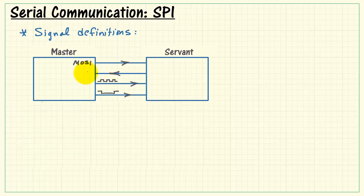Now the line going from master to servant is called MOSI, Master Out Servant In. It's an input on the servant device and an output on the master device. This one is commonly called MOSI. MISO, M-I-S-O, that would be an input for the master and an output from the servant, often pronounced MISO.